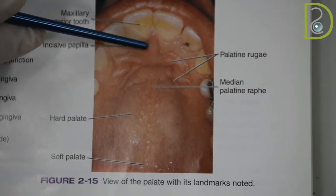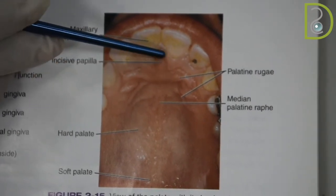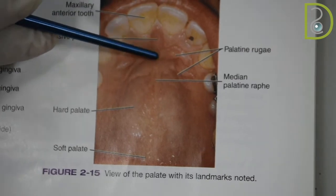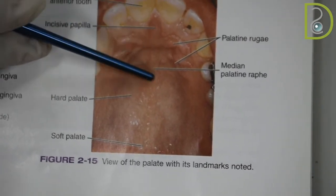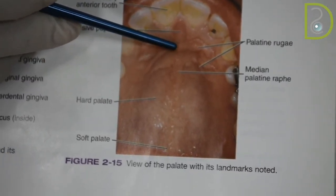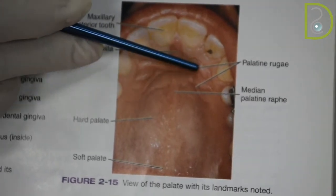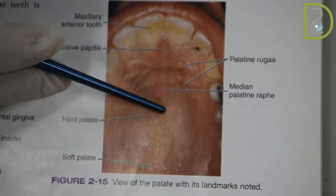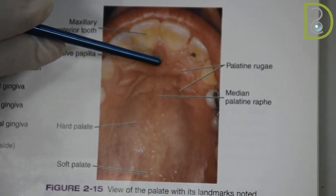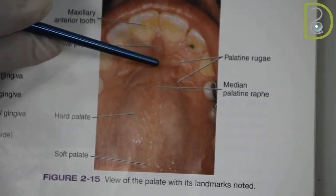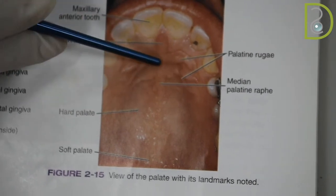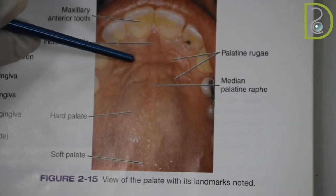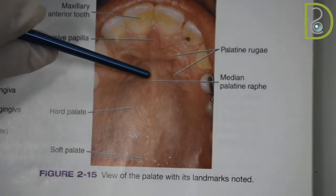The incisive papilla covers the incisive fossa. The median palatine raphe covers the median palatine suture and extends horizontally, starting a little bit posterior to the incisive papilla. Extending horizontally from the median palatine raphe are the rugae, which appear as horizontal ridges on the hard palate.